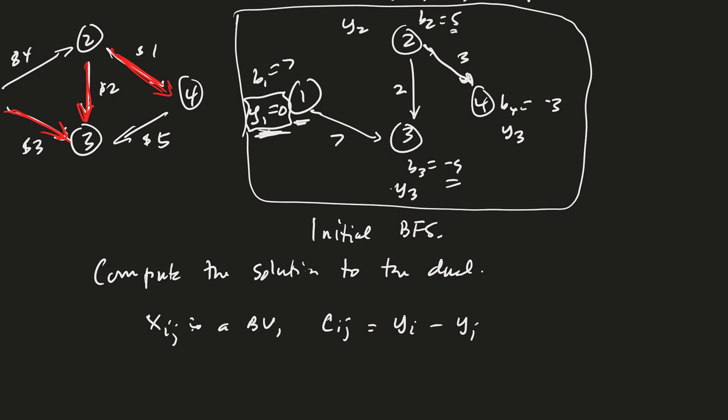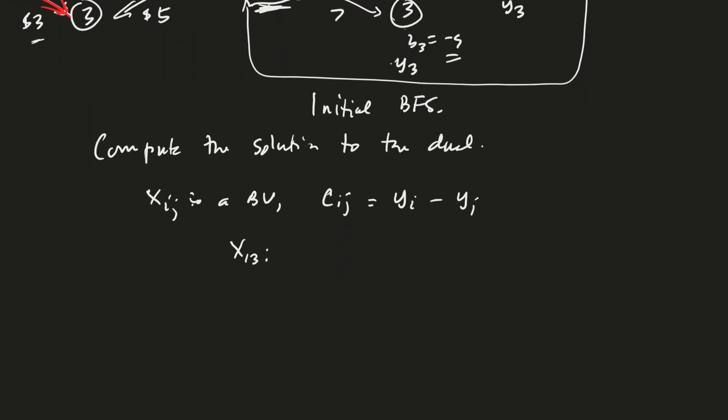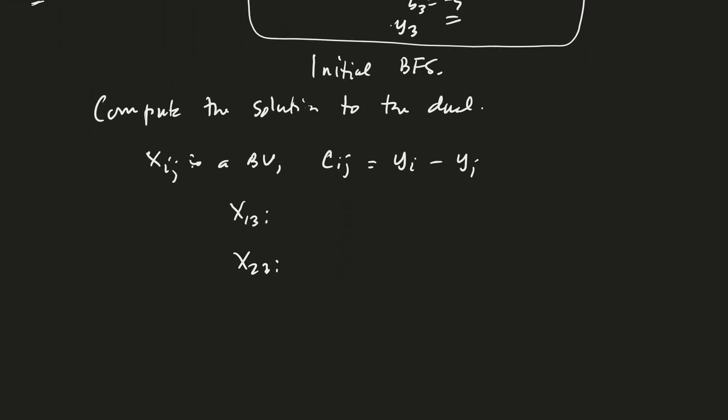So let's use those now. So using the fact that Y1 is 0, and I've got the edge 1, 3 here, I'm going to take the cost from 1, 3, which was 3. And so let's see, let me, I'll just call it X1, 3 here. That's going to be our one basic variable. What are the other ones? X2, 3, and X2, 4. X2, 4, just so we remember those. And so then we're going to take Cij equals Yi minus Yj, right?